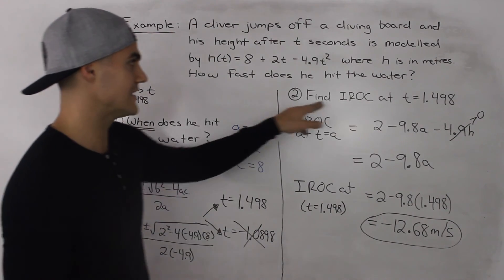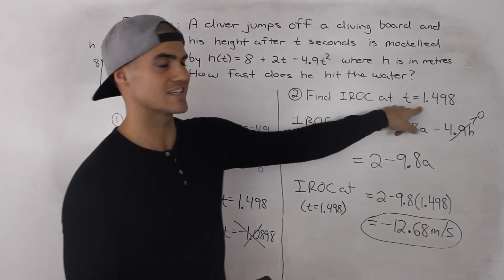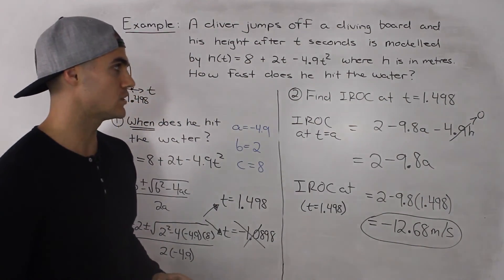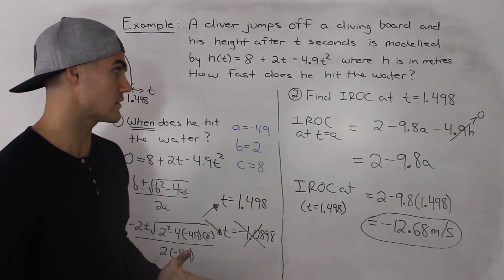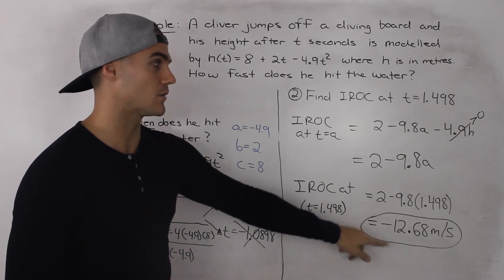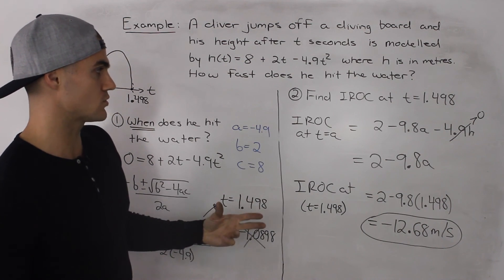And then what we do is we find the instantaneous rate of change of this equation at t equals 1.498. Now there's a couple of ways to do it. You can use the preceding and following interval method or the centered interval method. I would recommend actually trying those methods and seeing if you get the same answer. If you want the exact rate of change then you have to use the difference quotient.